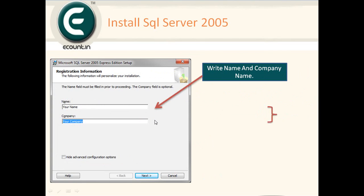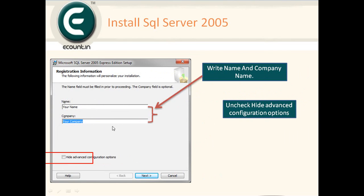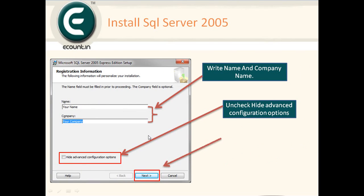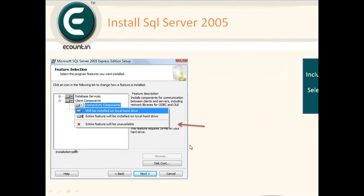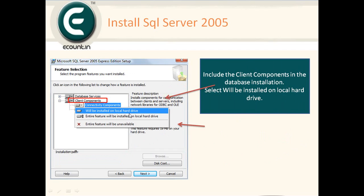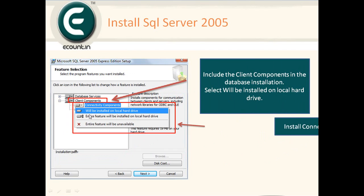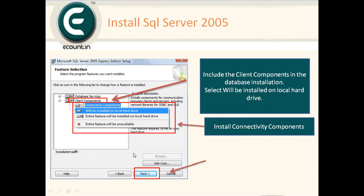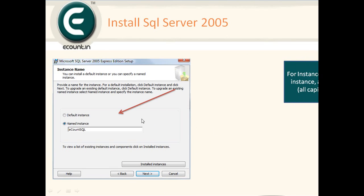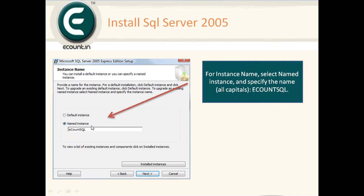Enter your company name and system name — it doesn't matter what you write. Uncheck the 'Hide Advanced Configuration' option — don't forget to uncheck this. Click Next. The client components will be installed on a local drive. Select the named instance option and write 'accountsql', then click Next.